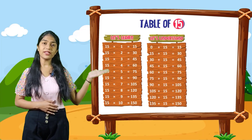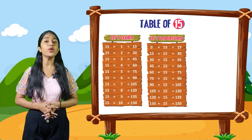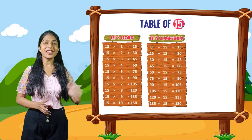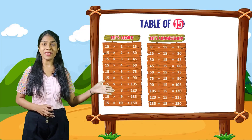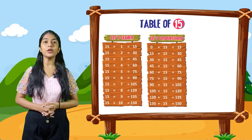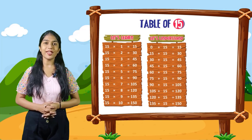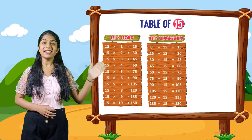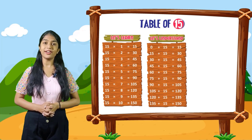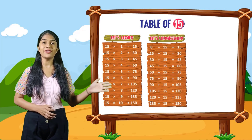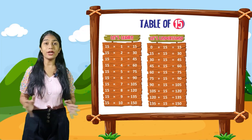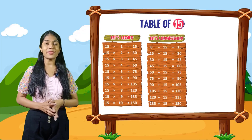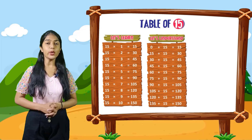So now let's understand. 0 plus 15 is equal to 15. 15 plus 15 is equal to 30. 30 plus 15 is equal to 45. 45 plus 15 is equal to 60. 60 plus 15 is equal to 75. 75 plus 15 is equal to 90. 90 plus 15 is equal to 105. 105 plus 15 is equal to 120. 120 plus 15 is equal to 135. 135 plus 15 is equal to 150.